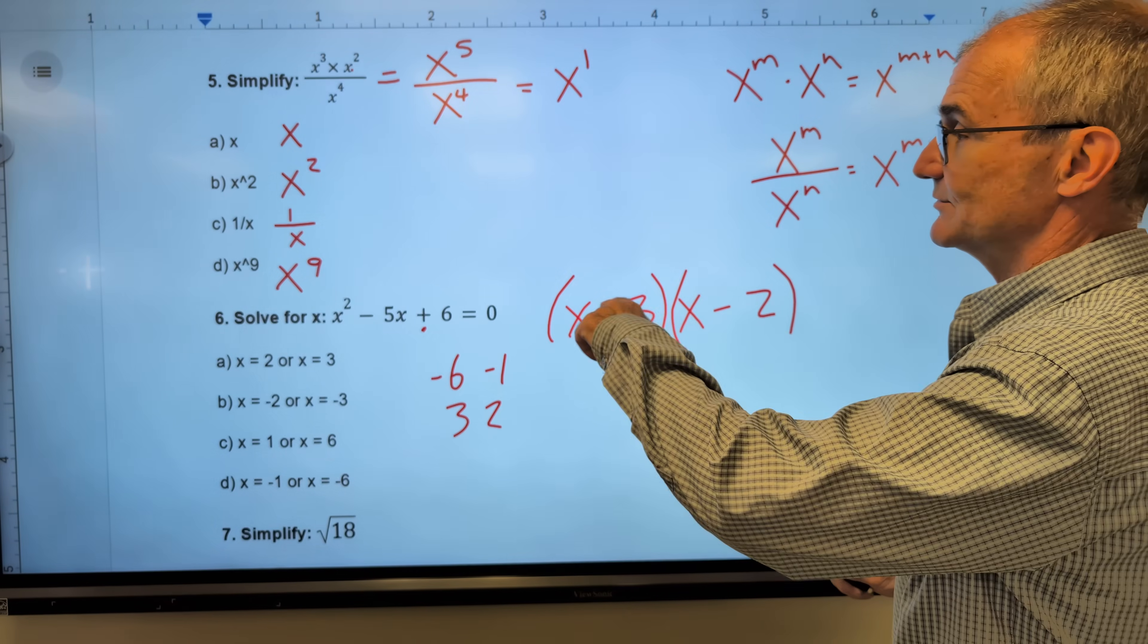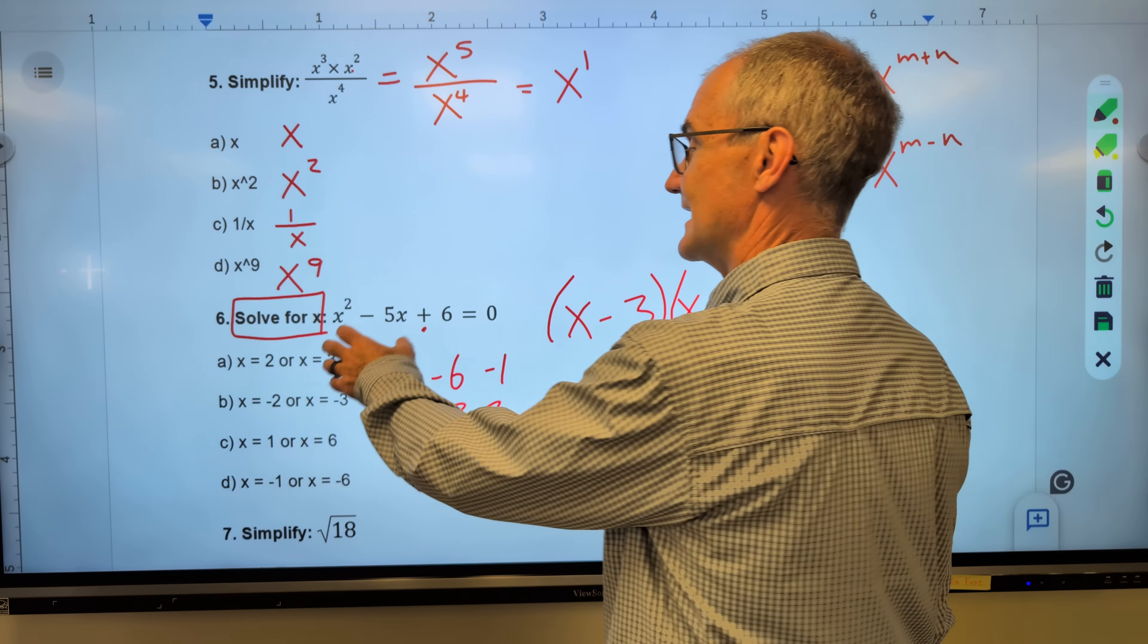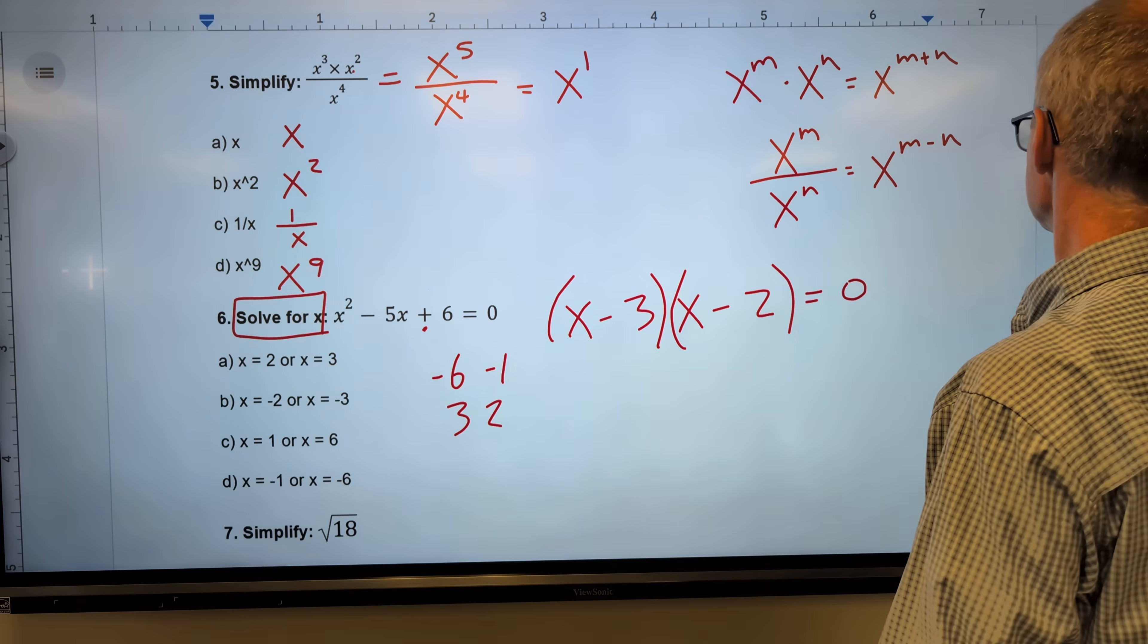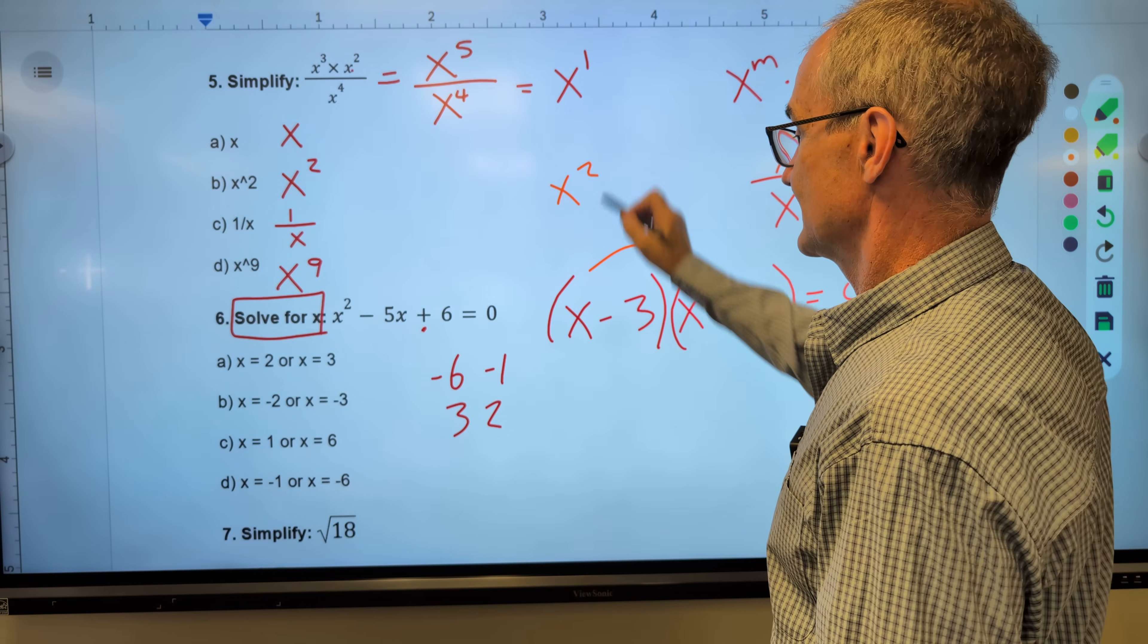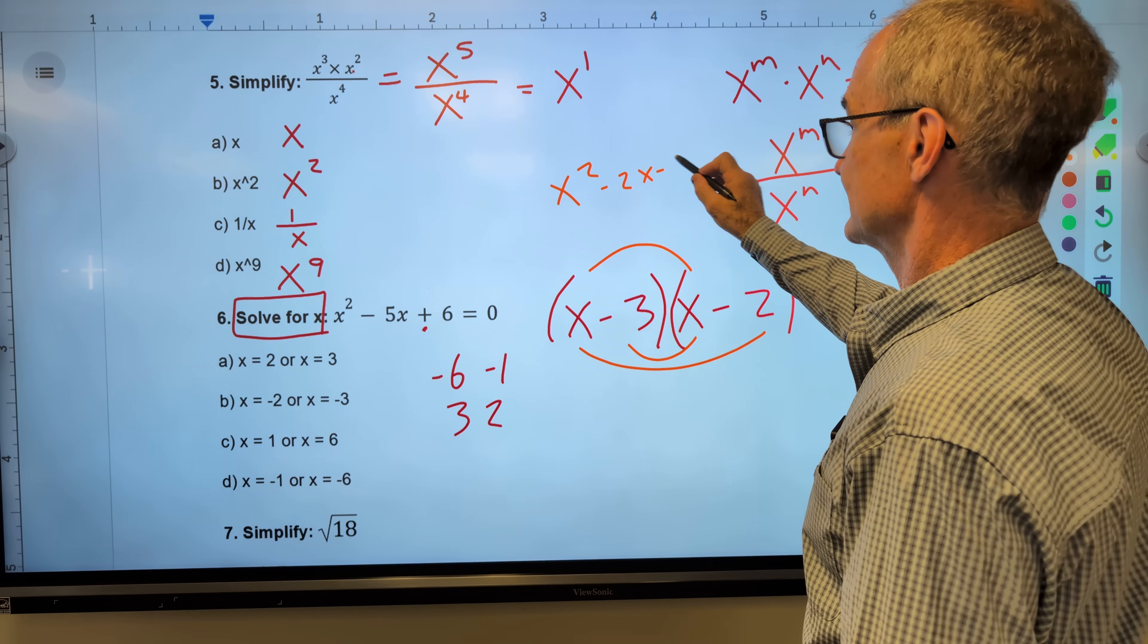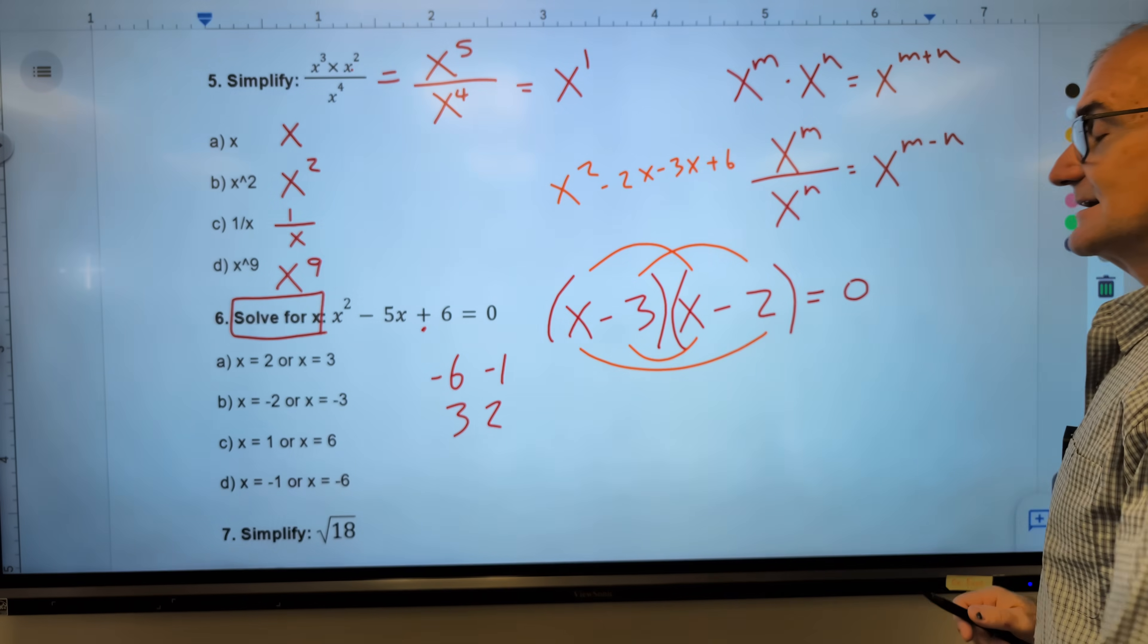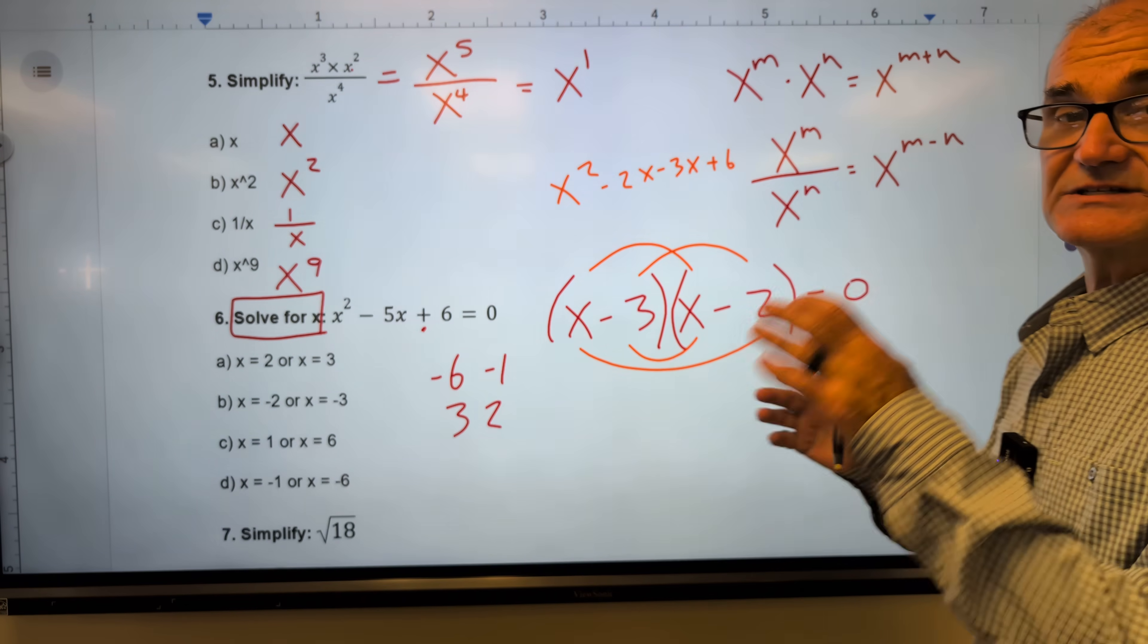This is different than the previous one, because this is an equation that says solve for x. So now that I have this thing factored, it is equal to 0. I could double check that. Let me double check that I factored it correctly. First, x squared. Outer, negative 2x. Inner, negative 3x. Last, 6. x squared minus 5x plus 6. I did factor it correctly.